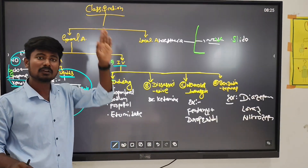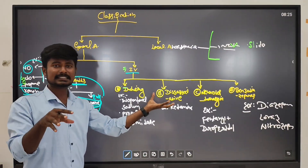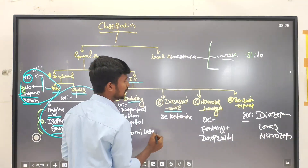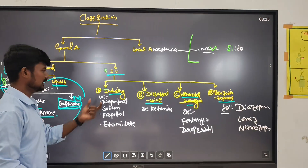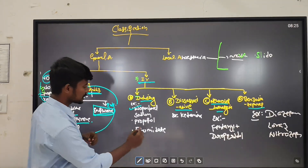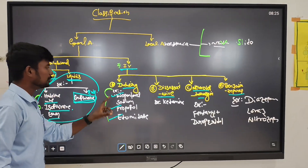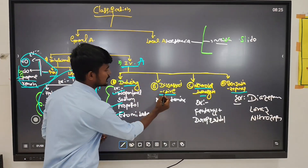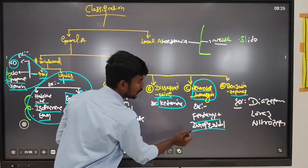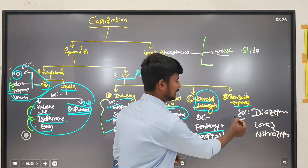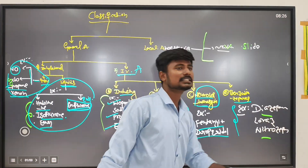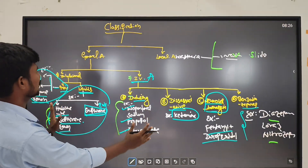The second type is intravenous anesthesia, used before surgical procedures such as abdominal surgery to induce loss of consciousness. IV anesthesia is classified into: inducing anesthesia (thiopental sodium, propofol, etomidate); dissociative anesthesia (ketamine); neuroleptic anesthesia (fentanyl plus droperidol); and benzodiazepines (diazepam, lorazepam, midazolam). This completes the classification of general anesthesia.